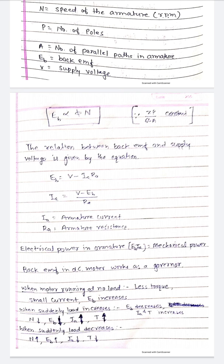When suddenly load increases and speed decreases, EB decreases, armature current increases, and torque increases.